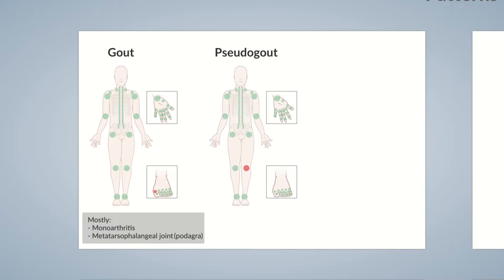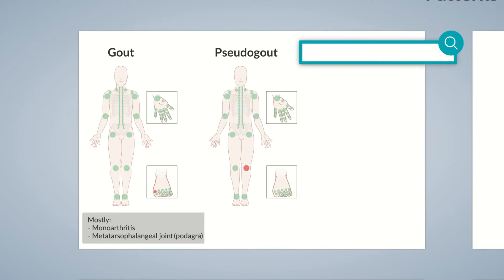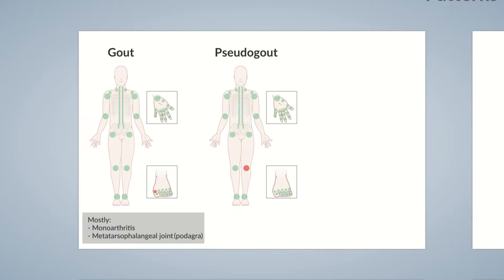Another condition that occurs as frequently as gout is pseudogout. Like gout, pseudogout is also caused by crystal deposition. But unlike gout, uric acid crystals aren't deposited in and around the joint — rather calcium pyrophosphate dihydrate, in short, CPPD. It comes as no surprise that pseudogout is also termed acute CPP crystal arthritis. The condition can result in acute attacks of joint pain and often presents as acute monoarthritis of the knee.